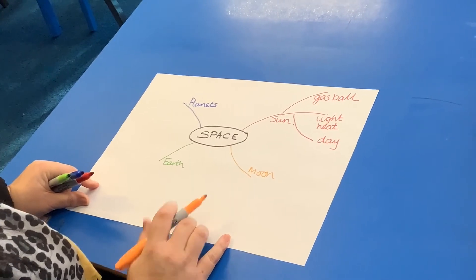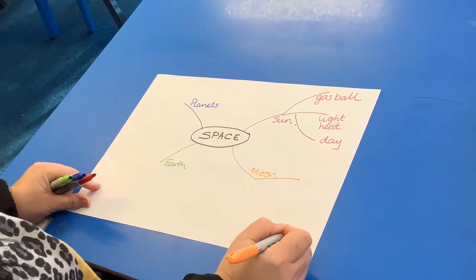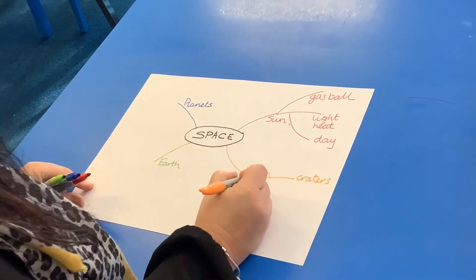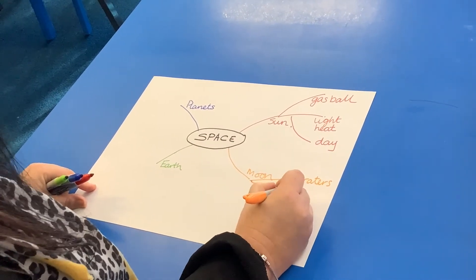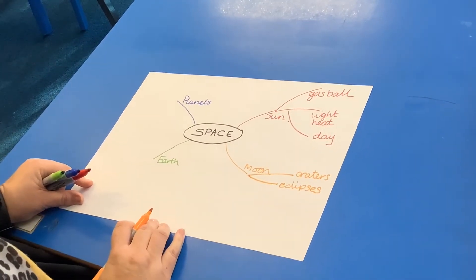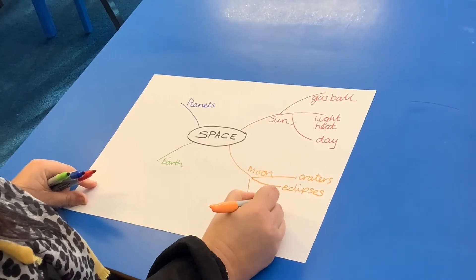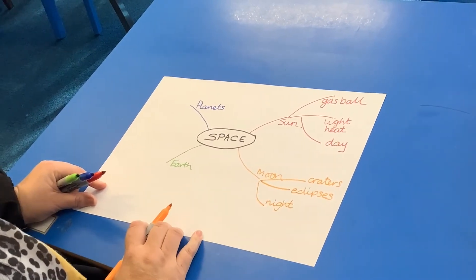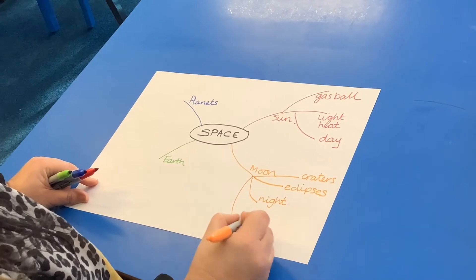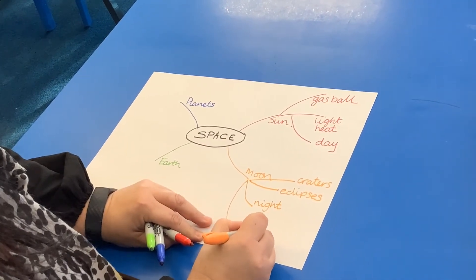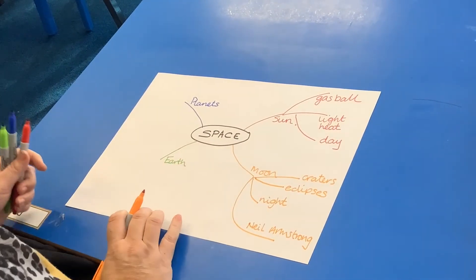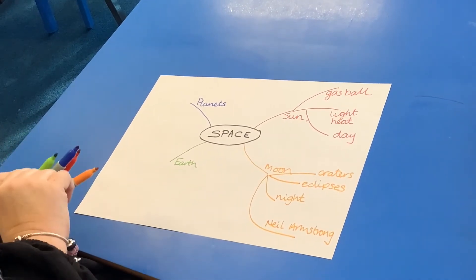The Moon — what do I know? I've seen Wallace and Gromit but I don't think it's made of cheese! I know there are craters, and I think you can get eclipses of the moon. We normally see the moon at night, although sometimes you can see it during the day. Thinking about linking it to our English — I know that Neil Armstrong walked on the moon. You might know some other astronauts.